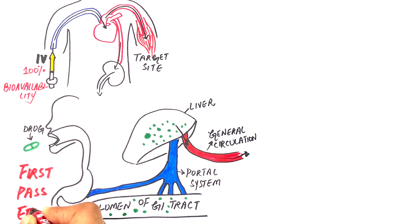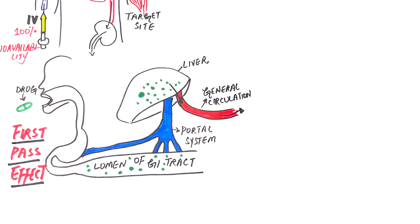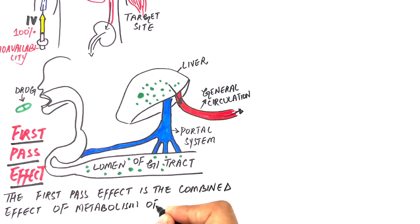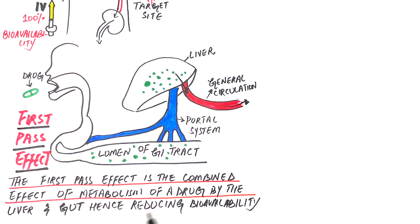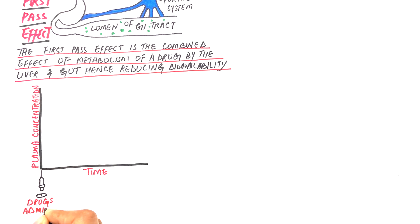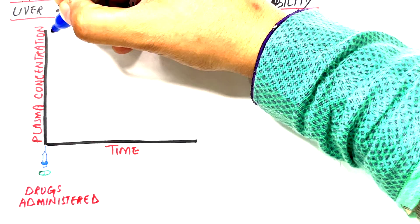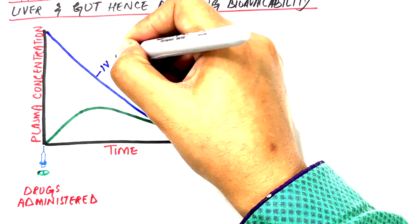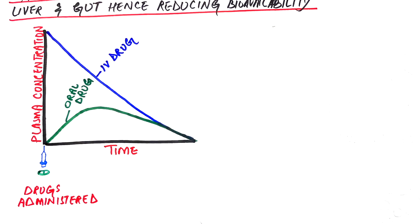The first pass effect refers to the combined effect of metabolism of the drug by the liver and in the gut, hence reducing the bioavailability of the drug given orally. Let's draw a graph and look at the bioavailability of drugs given orally and intravenously. The bioavailability of a drug when given intravenously will be 100% as the drug directly enters into the circulation, and then drops down over time. However, the bioavailability of a drug given orally will be 0% initially, which will then raise progressively but not to the extent of IV, and then it will drop down over time.